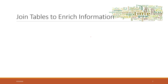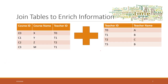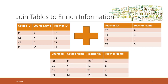Now let's talk about how to join tables. Last week we said that to eliminate data redundancy, we should split tables, which is correct because that can save data storage. However, if you want to enrich information when making queries, we want to join those tables together again so that we can get enriched information from both tables. For example, here we have the course table and the teacher table.